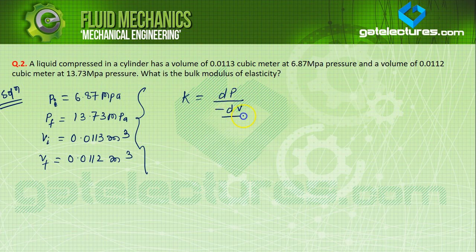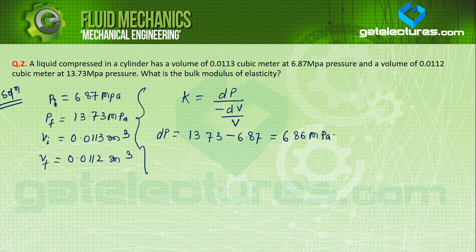Bulk modulus K = dP over (minus dV over V). dP = 13.73 minus 6.87 = approximately 6.86 MPa. Then minus dV: since volume decreases, we take the negative sign. Minus dV over V = V_final minus V_initial with the negative sign already applied: 0.0113 minus 0.0112.